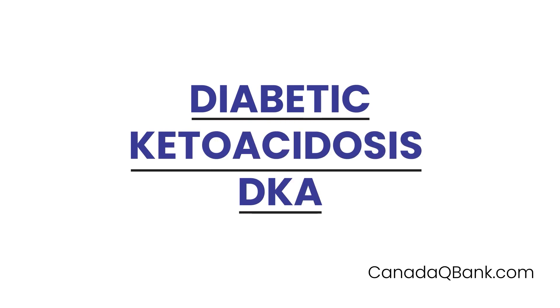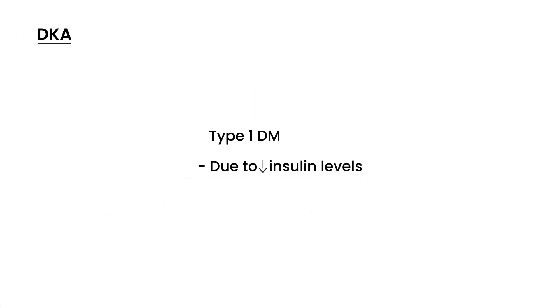Diabetic Ketoacidosis, or DKA, is what we will discuss. DKA is a very serious consequence that occurs in type 1 diabetes mellitus, and it is basically due to the fact that you have very inadequate insulin levels. I'm going to try my best to go through the pathophysiology of DKA, covering about 5 things that are important to understand.